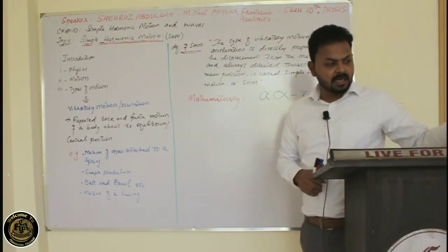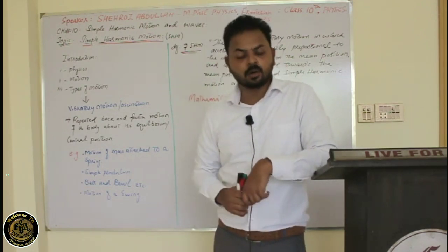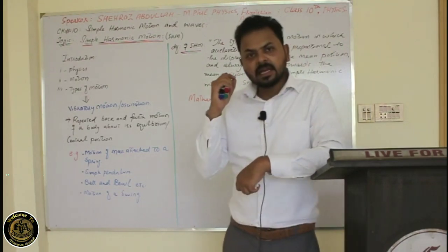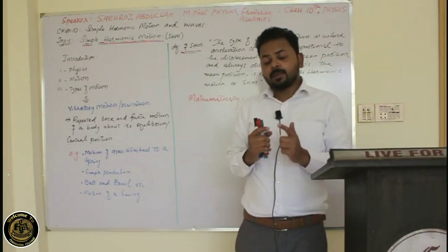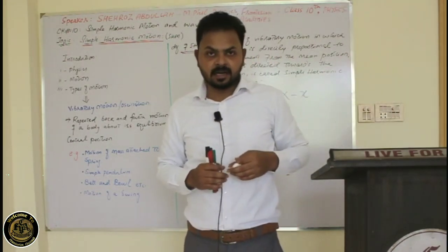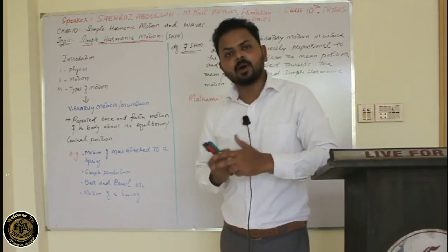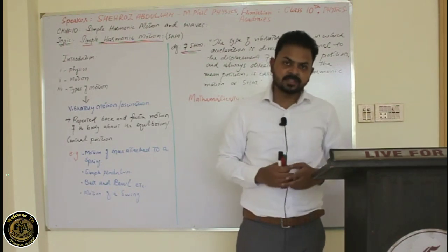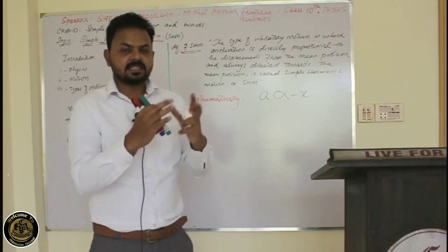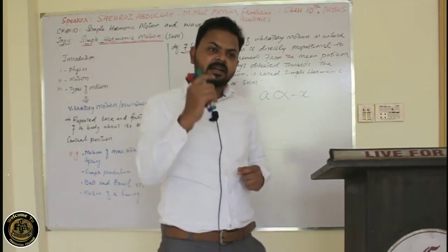There are so many types of motion. We learned in Class 9 that there are three types: translatory, vibratory, and rotatory, with different subtypes as well. In Class 10, our basic aim is to understand vibratory motion. Vibratory motion is the repeated back-and-forth motion of a body about its central position, or equilibrium position. For example, a kid sitting on a swing oscillates about the mean position, repeating its motion in equal intervals of time.